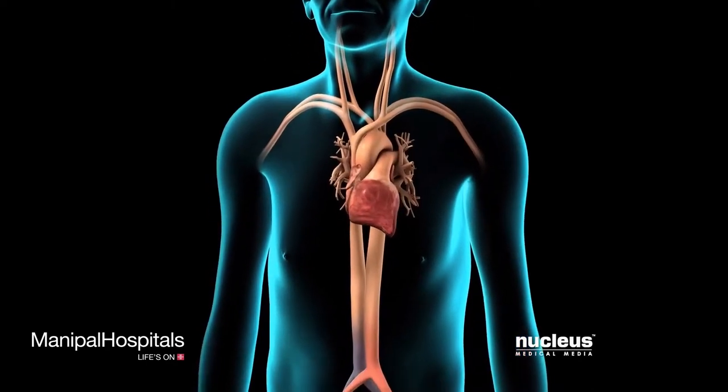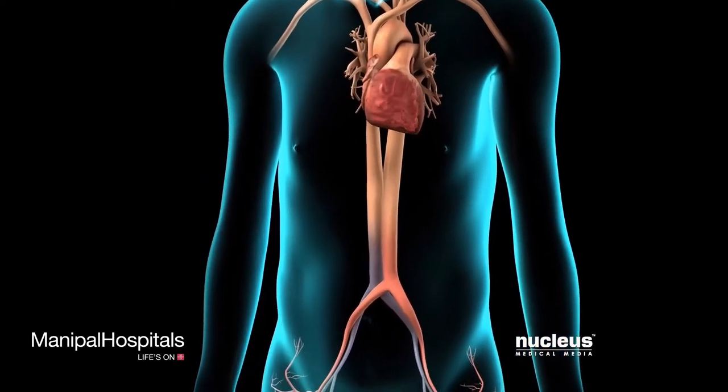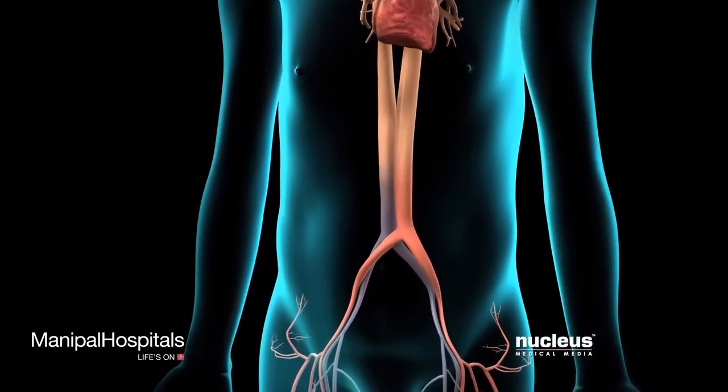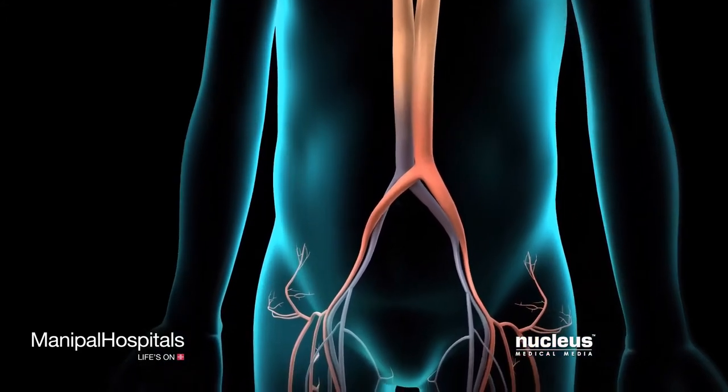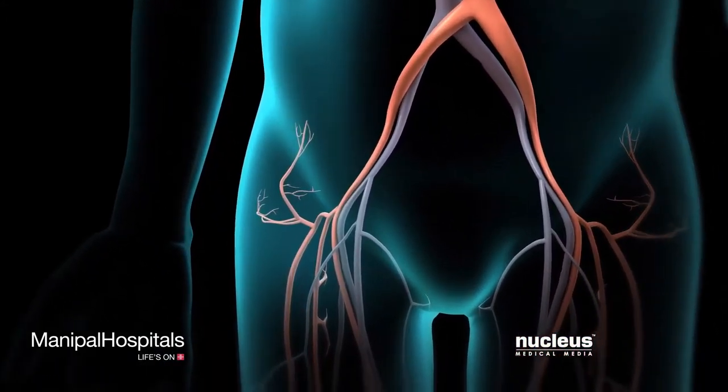For certain types of arrhythmias, a catheter ablation procedure may be necessary to stop the heart tissue from causing the arrhythmia.